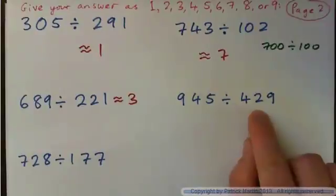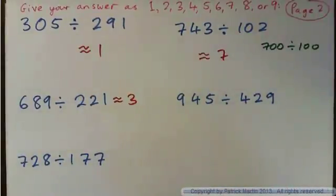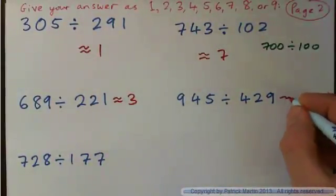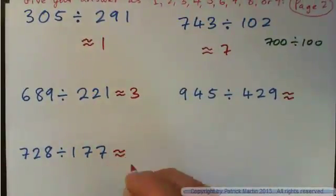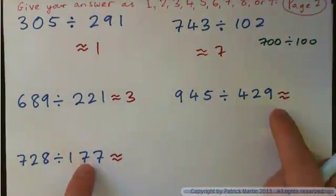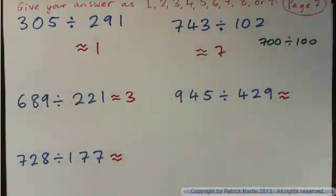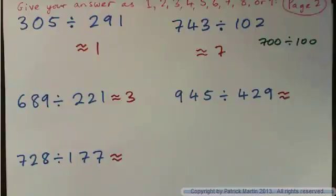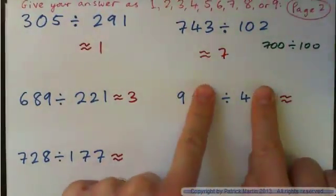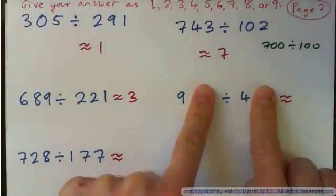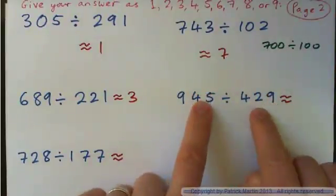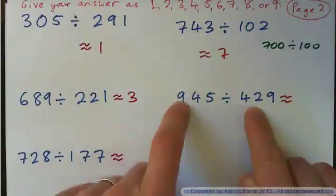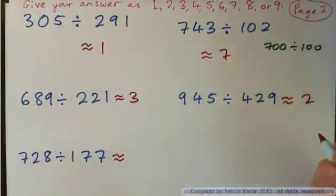How many 429s are contained in 945? Press pause and try these two. It's kind of like 9 divided by 4, which goes twice. Two of these would be a little less than 945, so say about 2.